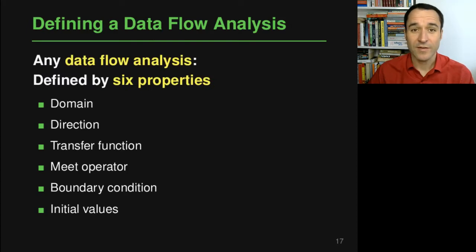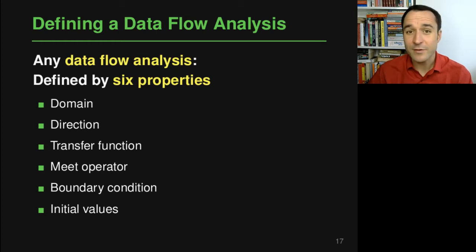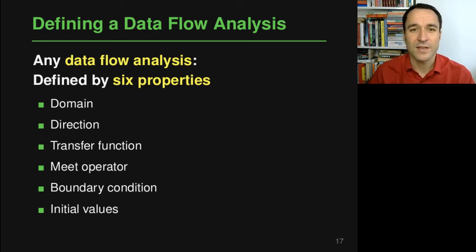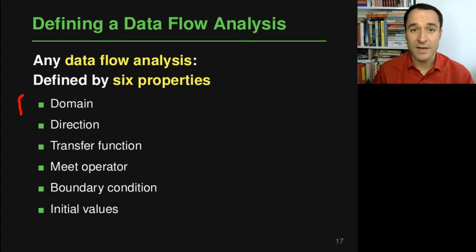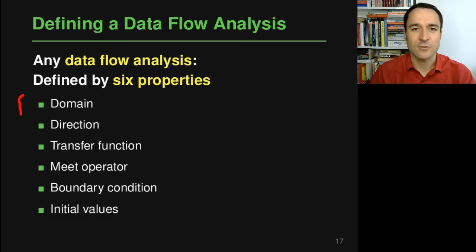In order to define a data flow analysis there are six important properties, and in a sense you just have to remember these six properties because everything else is derived from them. A data flow analysis is defined first by a domain, which basically tells us what kind of information the analysis is reasoning about and what is the analysis state that the analysis tries to propagate through the program.